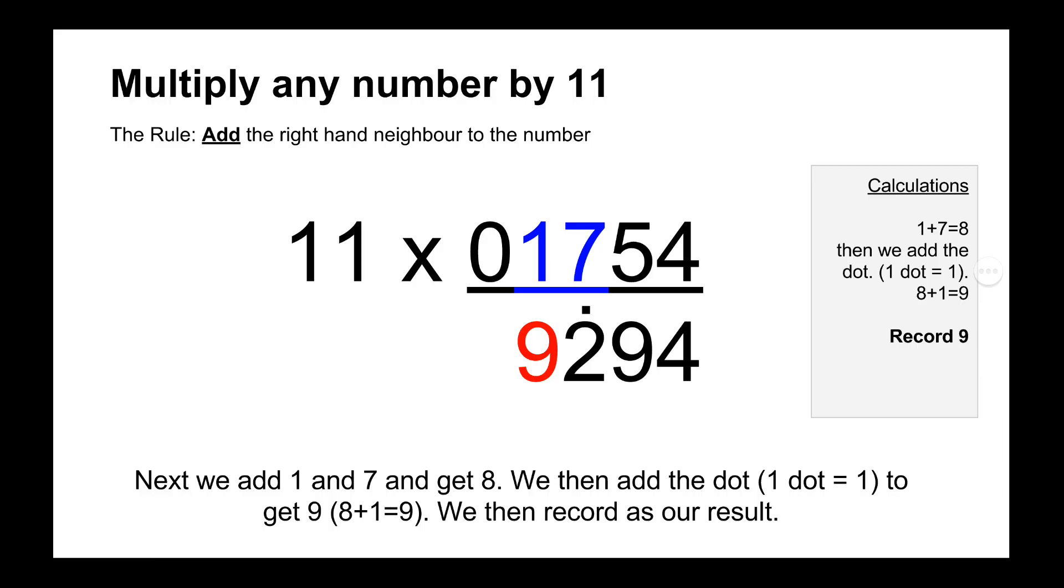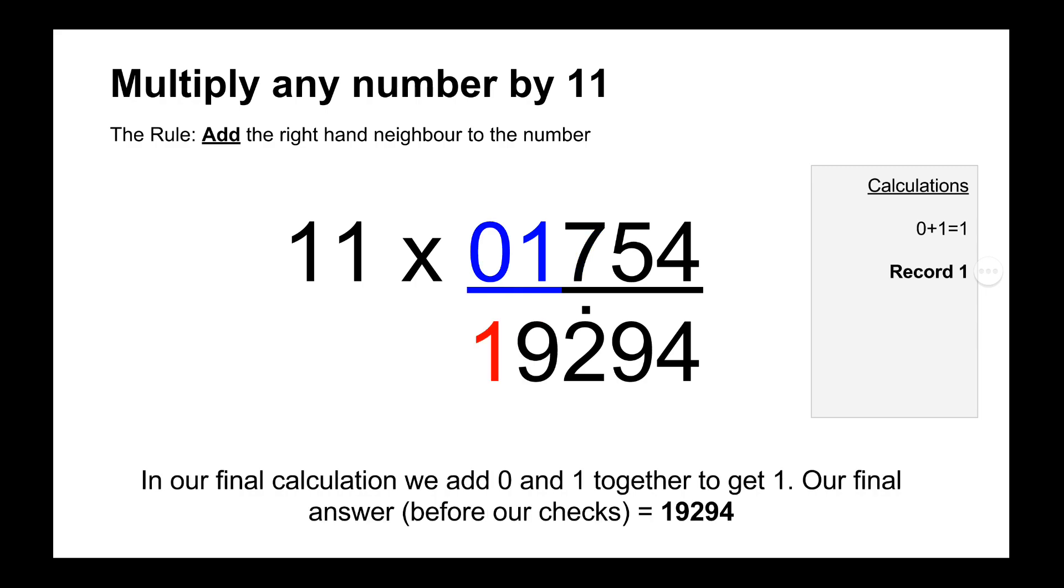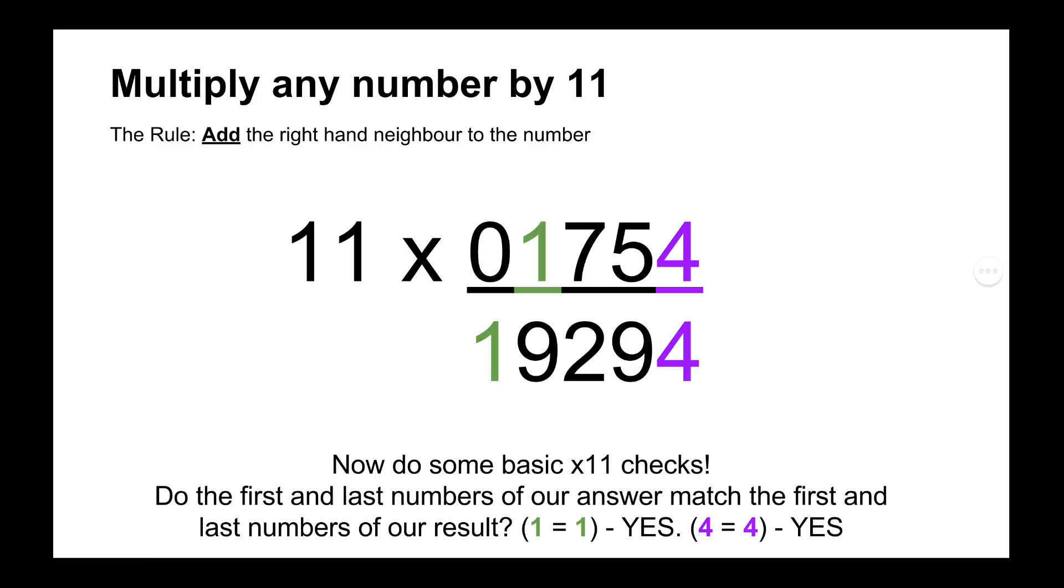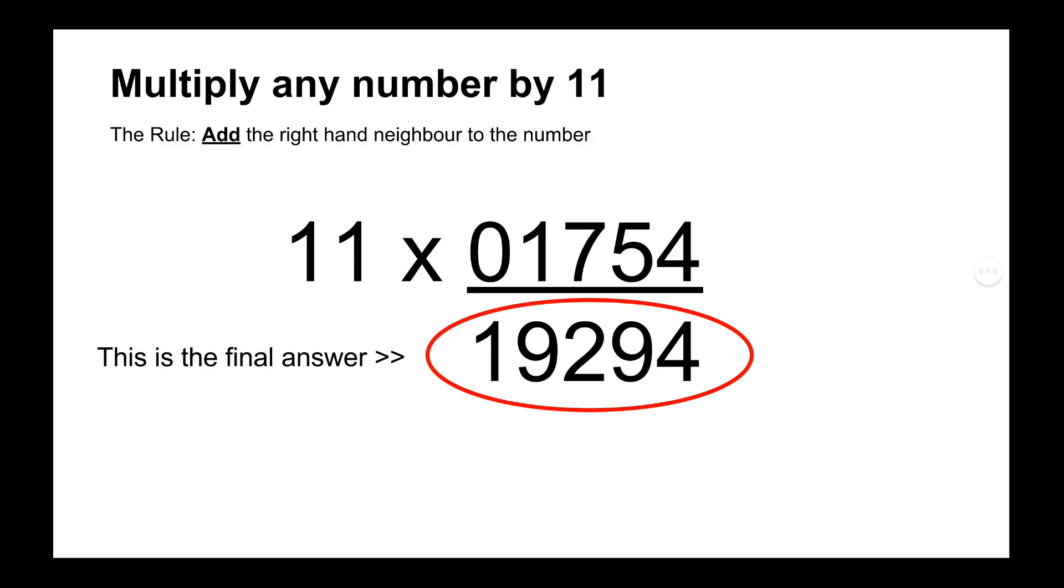So then we record the 9 and we move on to the last digit which is 0 which we added, and we do 0 plus 1 equals 1 and there's our answer. 11 times 1,754 is 19,294, and we can do some basic checks again and make sure that the last digits are the same and the first digits are the same shown in green and purple. And there's our final answer.